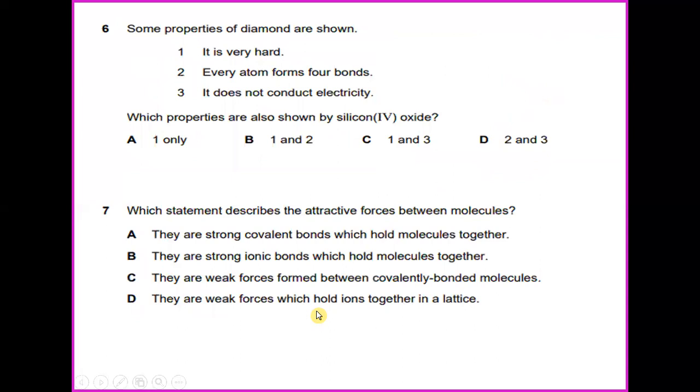Six. Some properties of diamond are shown. Is diamond very hard? Yes. Every atom forms four bonds? No, not really. And it does not conduct electricity? Yes, diamond does not conduct electricity. So which properties are also shown by silicon dioxide? So the answer would be C.